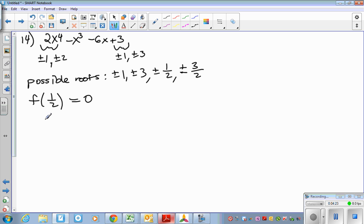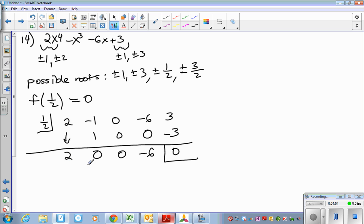Then once you get a root, do synthetic division. You can do synthetic division with fractions. Now be careful here, there's no x squared. So this is two, negative one, zero, negative six, and three. Carry the two, multiply, one-half times two is one, add the column. One-half times zero is zero, add the column, multiply, add, and a half of negative six is negative three.